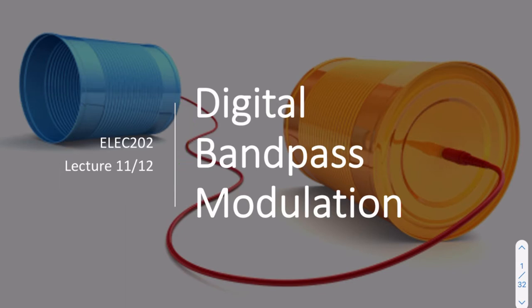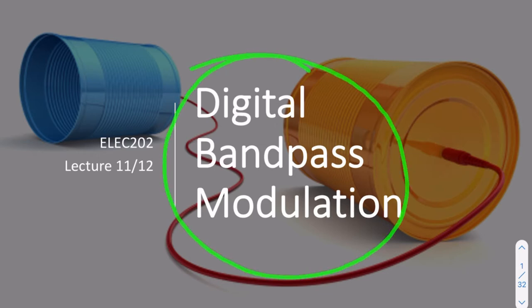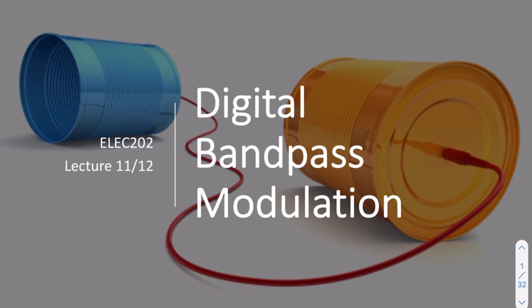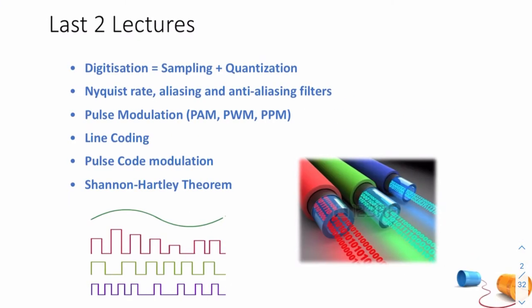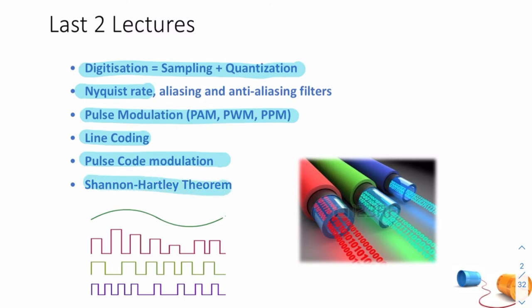Hello and welcome to lecture 11, where we'll talk about digital modulation or digital bandpass modulation. This is essentially the equivalent of lectures 2 to 6 but for digital versions — digital AM, digital FM, and digital PM. Last lecture we spoke about digitization, sampling and quantization, the Nyquist rate, different types of pulse modulation, line coding, pulse code modulation, channel capacity, and the Shannon-Hartley theorem.